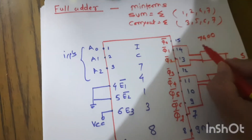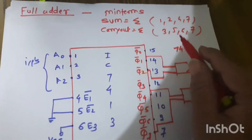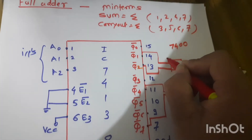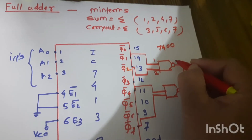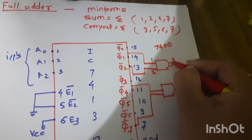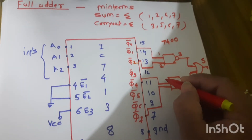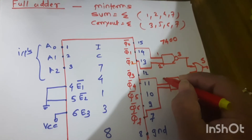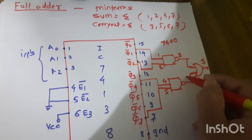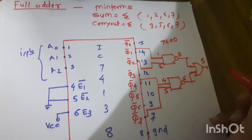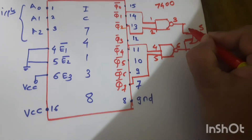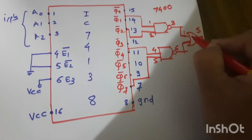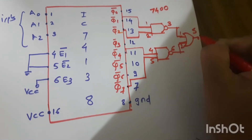Now we need to look at the pin configuration of IC 7400, the two-input quad NAND gate IC. In this IC, pins 1 and 2 are the inputs of the first NAND gate and pin 3 is the output. Pins 4 and 5 are the inputs of the second NAND gate and pin 6 is the output. For the OR gate (IC 7432), pins 1 and 2 are inputs and pin 3 is the output.